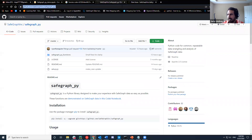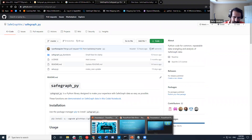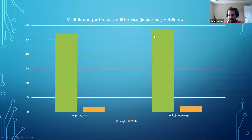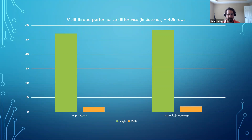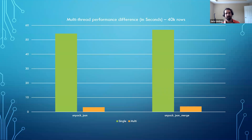Let's do a quick sneak peek at the multi-thread performance difference. The unpacked JSON for the single-thread — these are all in seconds, by the way — was only run on 40,000 rows, but it can obviously go up from there. The only limit is going to be your memory, which Brian will also talk about later, possibly working on out-of-memory datasets in the future.